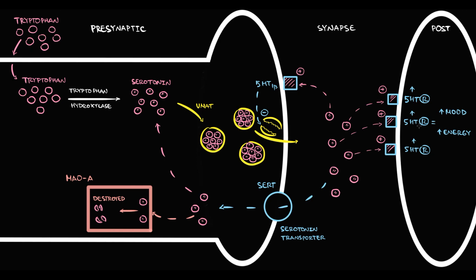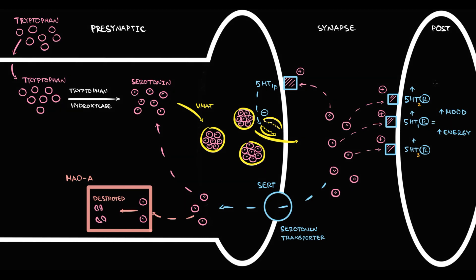We have different subtypes of serotonin receptors. We believe that serotonin type 1 receptor is fully involved in regulation of mood. We also have type 2 and type 3 receptors, which also participate in regulation of mood and energy but to a lesser extent. The specific feature of these receptors are their unique functions: the type 2 serotonin receptor is involved in regulation of appetite — with activation, this receptor causes decreasing appetite. Stimulation of the type 3 serotonin receptor can cause nausea and vomiting.